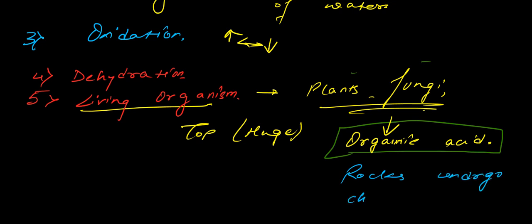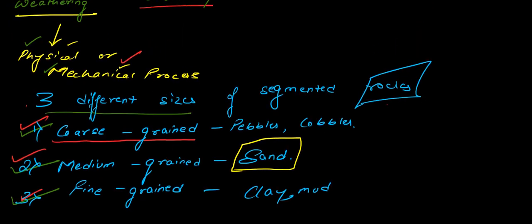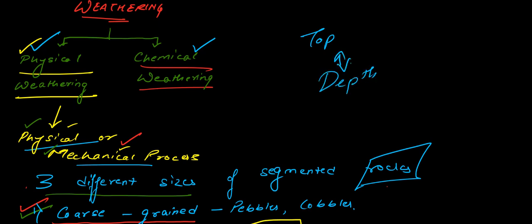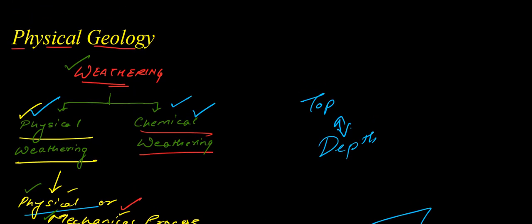So here we have discussed two different processes of weathering: first, physical weathering, where rocks are disintegrated by physical or mechanical methods; and secondly, chemical weathering, where the difference between the top surface of the earth and the depth — due to this difference — the rocks undergo chemical reactions and are disintegrated. We have discussed weathering and its two parts, which is a very important topic under Physical Geology. I will end this video here; you will find more topics on geology in our further videos.